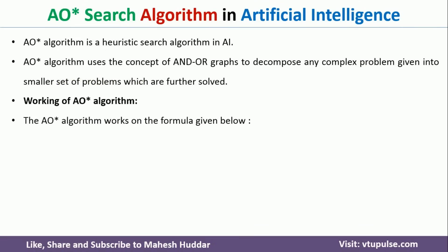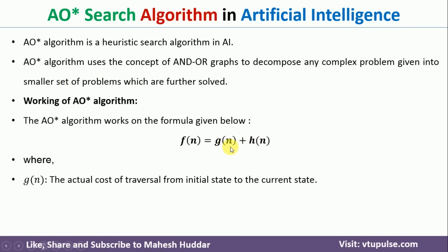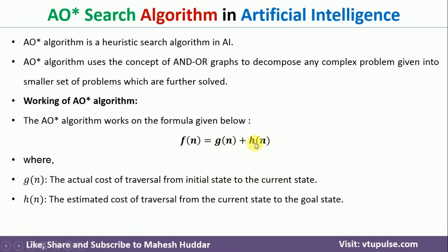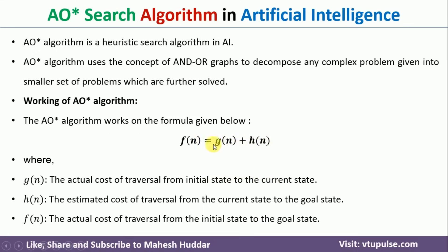In the AO* algorithm, we use an equation f(n) = g(n) + h(n), where g(n) is the actual cost to traverse from the initial state to the current state. For example, if n is the current state, then g(n) is the actual cost required to travel from the initial state to the current state. And h(n) is the heuristic value — the estimated cost to reach from the current node n to the goal node. When you add these two, you get the total cost of that node, denoted by f(n).